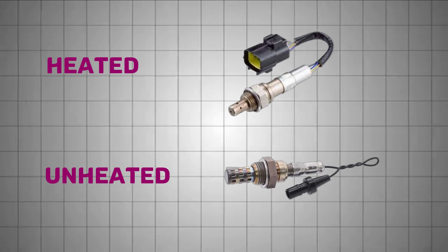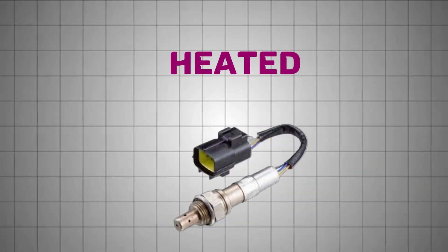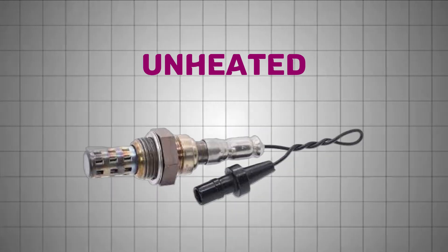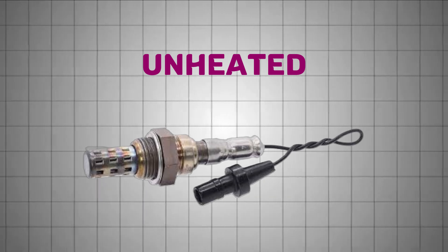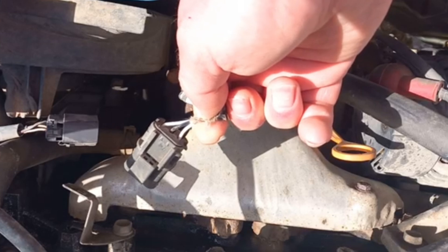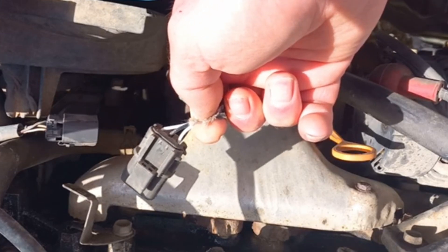They are also classified as heated and unheated. Heated O2 sensors typically have three or four wires - two for the signal and one or two for the heater circuit - while unheated sensors usually have just one or two wires, lacking the built-in heater. This extra wiring allows heated sensors to reach operating temperature faster, improving accuracy during cold starts.